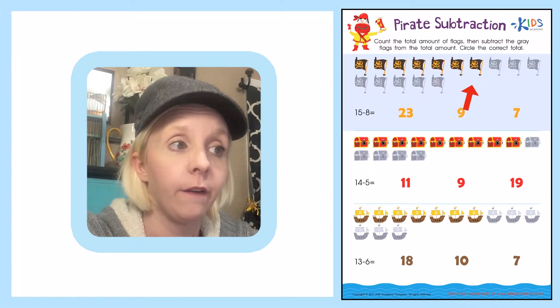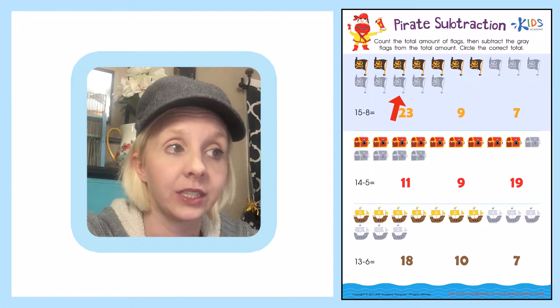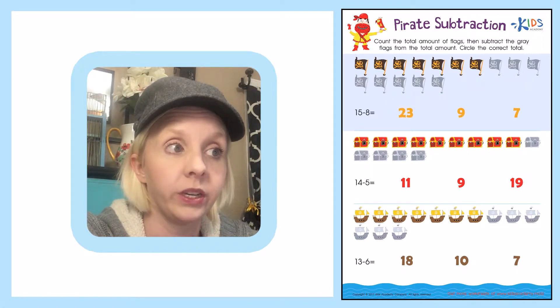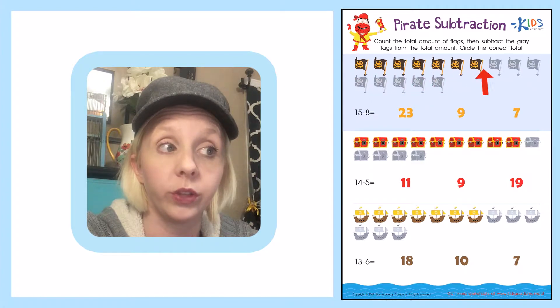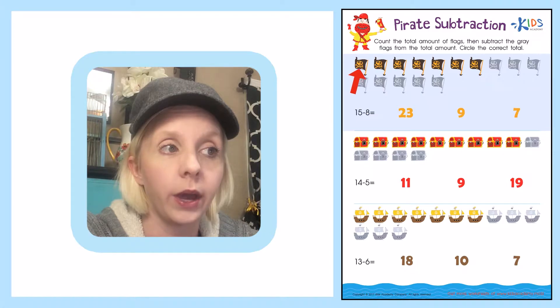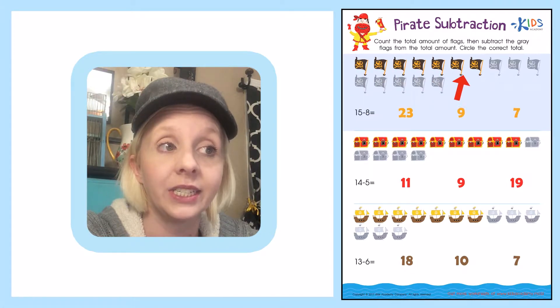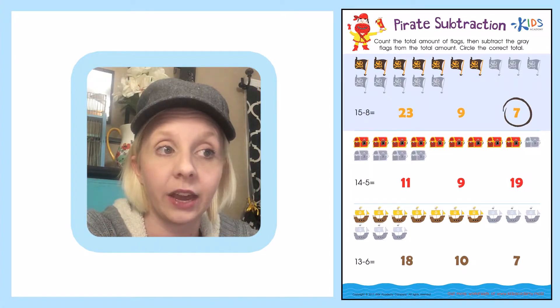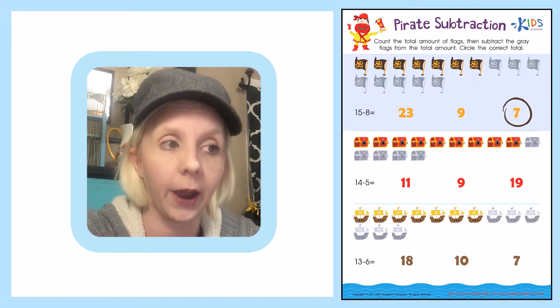1, 2, 3, 4, 5, 6, 7, 8. So they've already grayed out the ones that we're taking away. What we need to do now is to count the total that's left over out of 15. So let's count these up. 1, 2, 3, 4, 5, 6, 7. So our answer to 15 minus 8 is 7. We're going to go ahead and circle that.